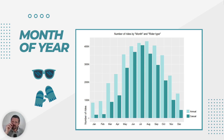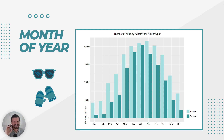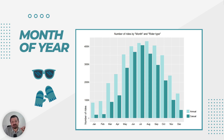When we look at the number of rides by month of the year, we can observe a significant difference in the behavior of annual members and casual riders. During the summer months, both groups tend to utilize our bikes equally. But during the winter months, it's clear that annual members rely on our services much more heavily, using our bikes at a rate five times greater than casual riders.